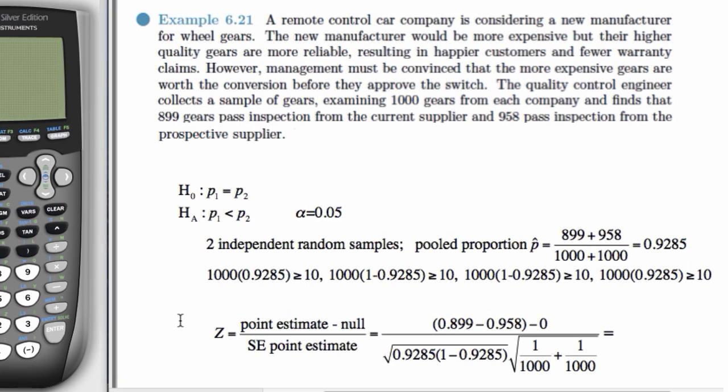First we carry out the initial steps. We set our significance level alpha. We have to assume that there's two independent random samples here. And now, different from when we did the two-proportion z-interval, we're going to look at this quantity, which is the pooled proportion p-hat.